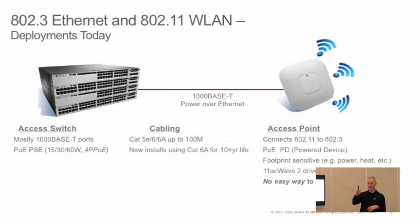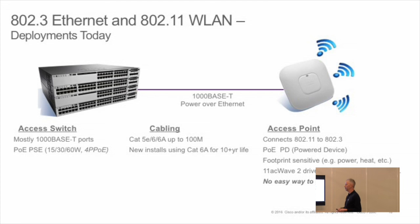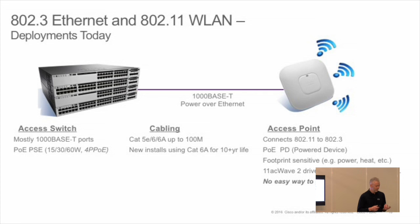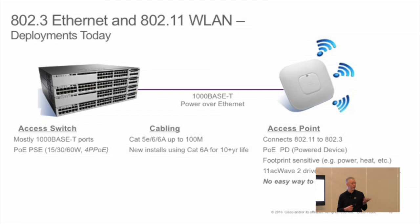If we think about how we deploy wireless today, access switches are mostly 1000Base-T ports with Power over Ethernet — 15, 30, or 60 watts. The current standard, 802.3BT, is looking at doing 100 watts — really heading to 90 to 100 watts — because they never want to come back and write another PoE standard. They've kept having to say 'let's do 15, let's do 30.'